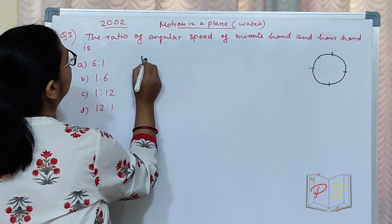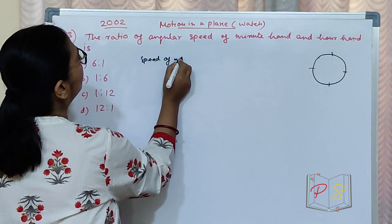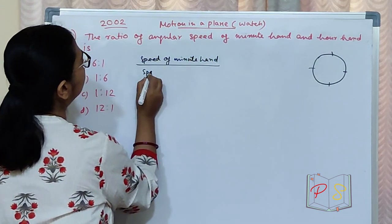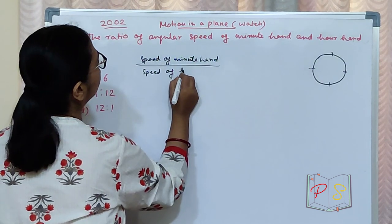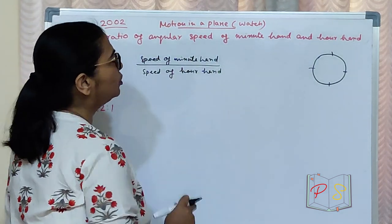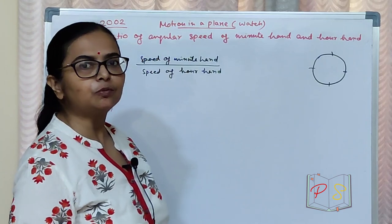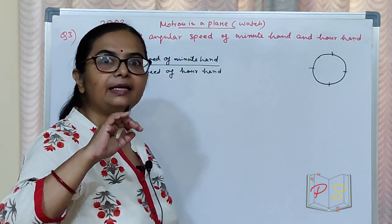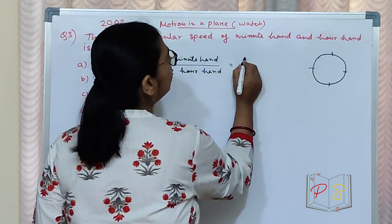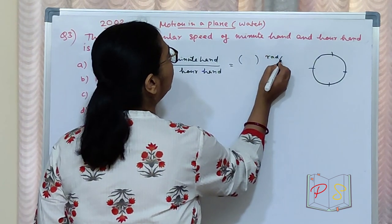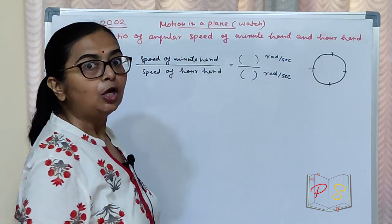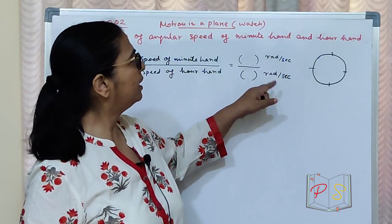Speed of minute hand divided by speed of hour hand. Angular speed can be taken in radian per second or degree per second — let's take both in the same unit, say radian per second. Take both in radian per second so the units will cancel.